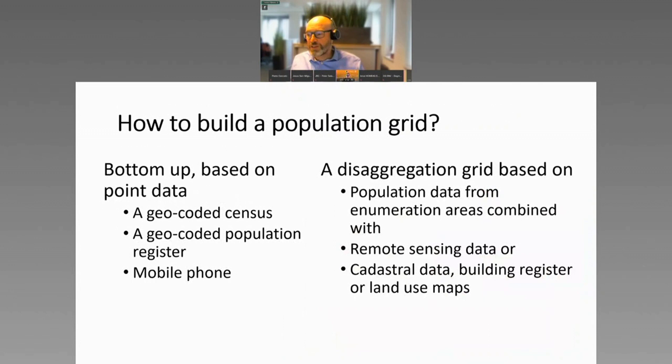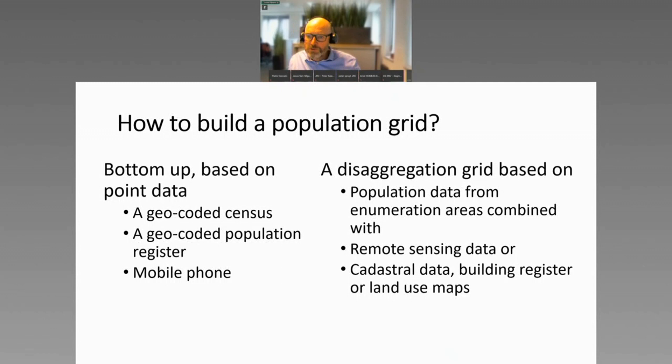But to have a population grid is a challenge. Some countries, like most European countries, have a census that's geocoded, or a geocoded population register, and then you create a grid based on point-based data. But most countries have to rely on a disaggregation grid. This is where remote sensing comes in. You take population from enumeration areas and combine that with remote sensing data, ideally continuous data that captures the presence of buildings. You can also work with cadastral data, building registers, or land use maps.